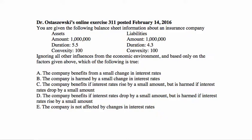Here is the exercise. You are given the following balance sheet information about an insurance company. The assets and liabilities are equal in their amounts. They're both 1 million. The currency is irrelevant, so we ignore that. The duration of assets is 5.5, where the duration of liabilities is 4.3. The convexity of assets and liabilities is exactly the same. It's 100.